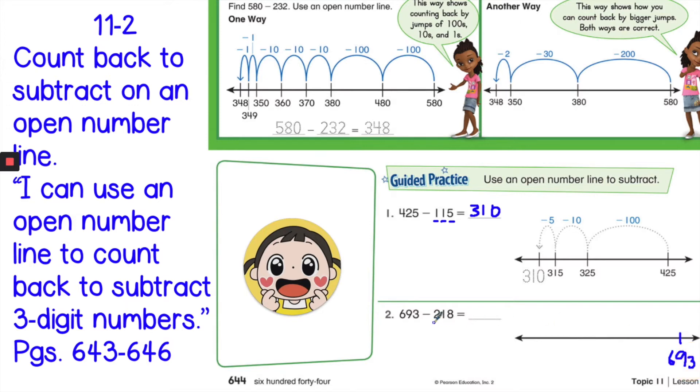Then we're going to hop back two hundreds. So 100, 200. When we hop back two hundreds, this would be 593, and then this would be 493.